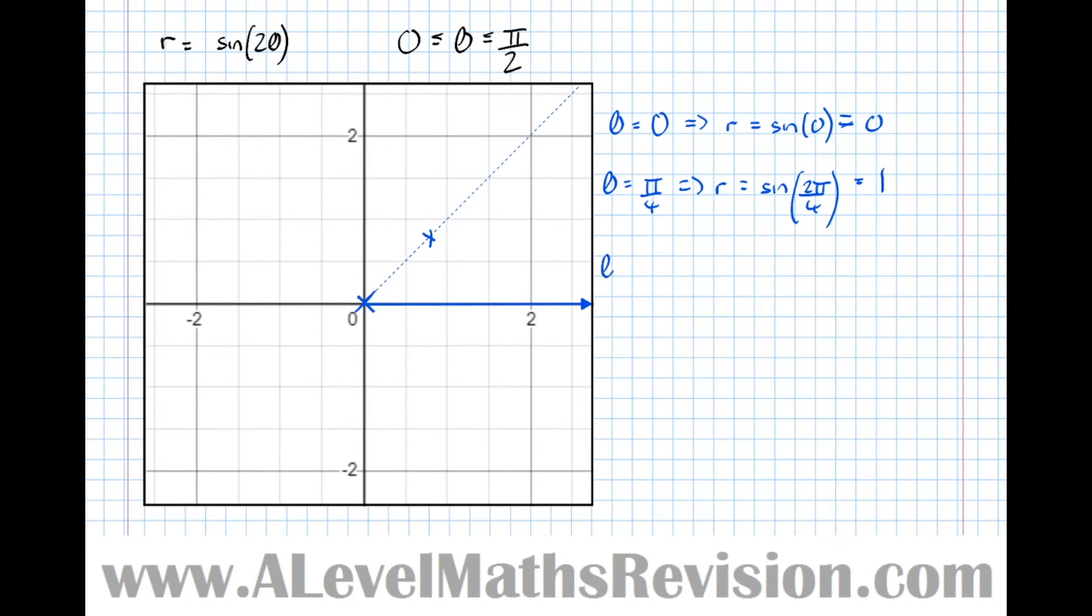Let's now go for theta equals pi over 2. See what happens. So the angle pi over 2 is this line here which I've dotted red.